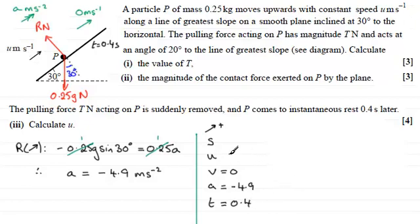So what equation involves U, which we're trying to find, V, A, and T? Well, the equation is going to be V equals U plus AT.